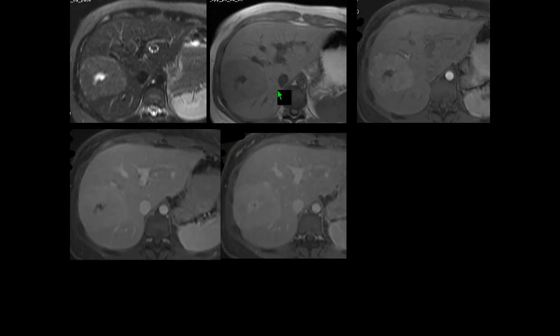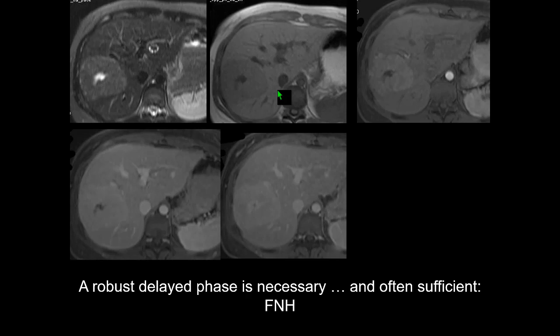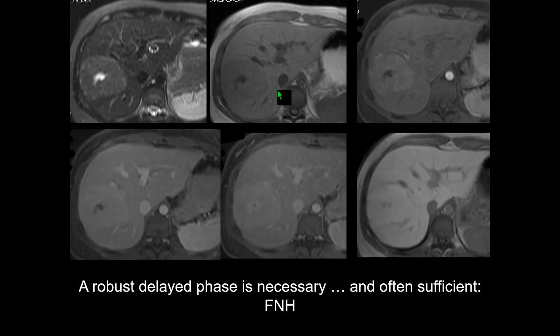For rapid-enhancing lesions, these are typical imaging findings of FNH, and we don't need the hepatobiliary phase, because we can clearly appreciate the hypervascular lesion, no washout, and the central scar — bright on T2, with enhancement in the late phase. A robust delayed phase is necessary and often sufficient for FNH. The hepatobiliary phase does not add significant information to this diagnosis.